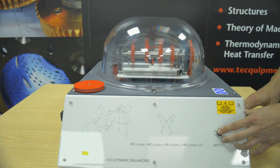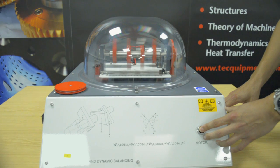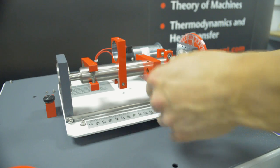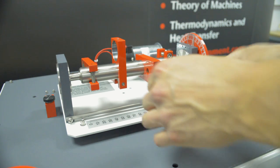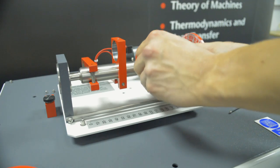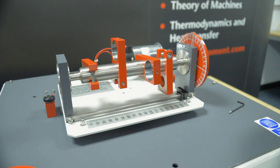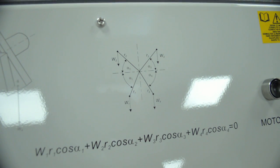Techquipment's TM1002 allows for experiments in balancing a rotating mass system statically and dynamically. The apparatus includes four balance blocks which fix in any horizontal position and relative angle on the shaft.